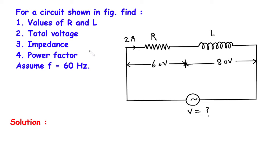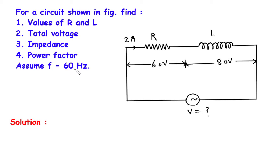If you find this video helpful, feel free to donate whatever amount you can — link is in the description below. For the circuit shown in the figure, find: number 1, values of R and L (resistance and inductance); number 2, total voltage; number 3, impedance; and number 4, power factor. Assume frequency F is equal to 60 Hz.